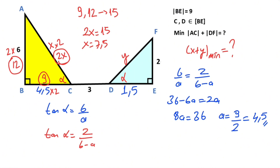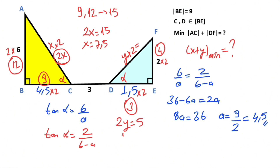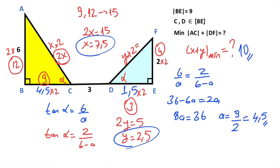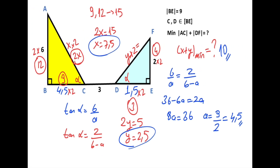Likewise, if you focus on this other triangle and multiply all the sides by 2, we can see that the triangle is actually a special right triangle with sides 3, 4, and 5. That means 2y must equal 5, so y is going to be 2.5. Therefore the minimum value for the sum of x and y is 10 units. That was the second method.